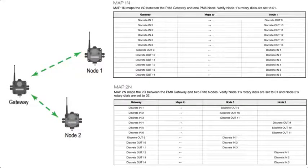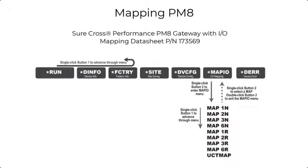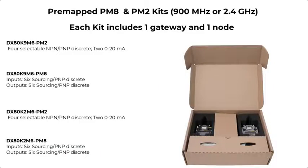Mapping to multiple nodes is possible. For more information on our mapping structure, review our short cross-performance PM8 or PM2 gateway I.O. mapping data sheets. When choosing a simple wireless system, start with our pre-mapped radio kits.